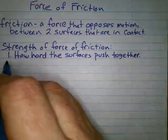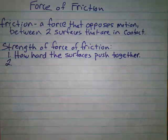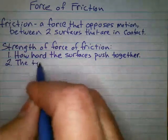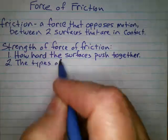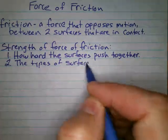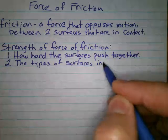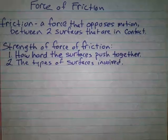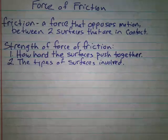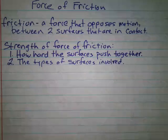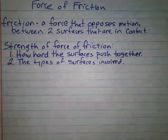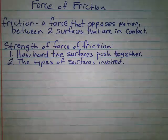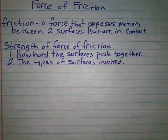The second thing that determines the force of friction is the types of surfaces involved. There's probably more friction between my hand and a sheet of sandpaper than between my hand and a smooth piece of glass. So the amount of friction depends on how hard they're pushed together and what kind of surface we're talking about.